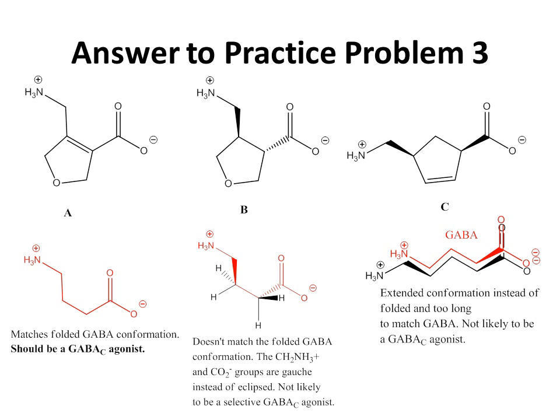Answer to Practice Problem 3. With Structure A, the amino group and the carboxyl group are in a locked folded conformation that matches the folded GABA conformation, and thus compound A should be a GABA-C agonist. With compound B, it looks initially like it's correctly folded, but if you compare it to what GABA would look like with the amino group coming towards you and the carboxyl group going away from you, this doesn't match the folded GABA conformation because the amino and carboxyl groups are gauche instead of eclipsed. So compound B is not likely to be a selective GABA-C agonist, although it may have some binding.